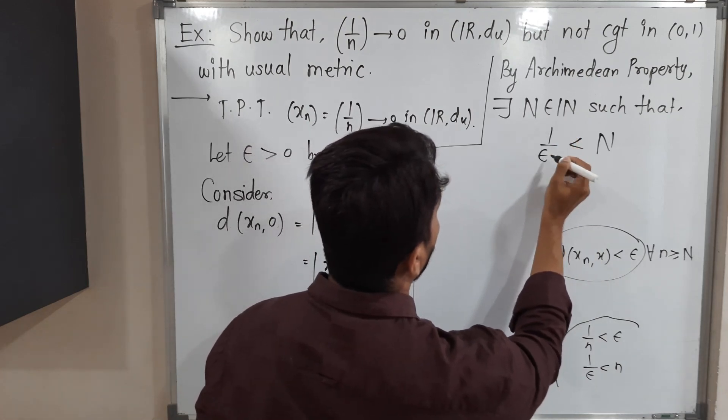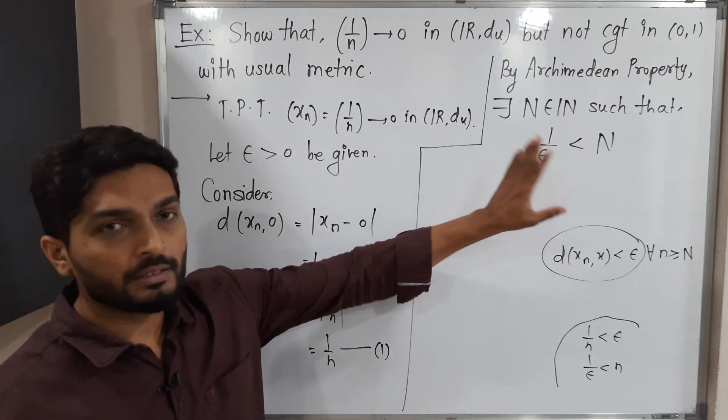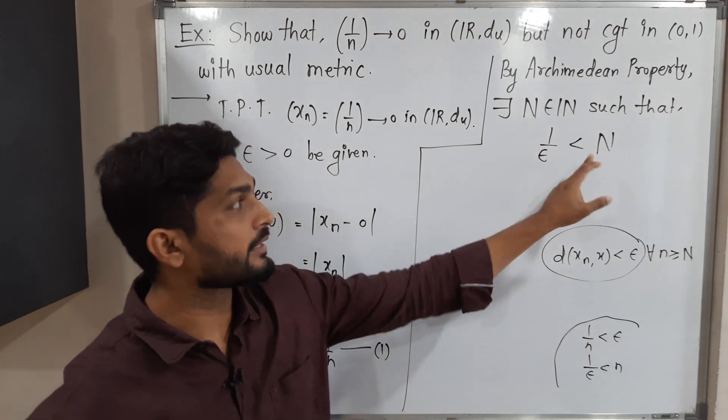Its value we have already calculated which is 1 by n. I have to prove that this is 1 by n. I should prove this is less than epsilon. I will do rough calculation. I will interchange them. So 1 upon epsilon less than n. So my real number should be 1 upon epsilon. So in this way I have selected capital N. 1 upon epsilon is a real number. So Archimedean property says there exist a natural number greater than that.